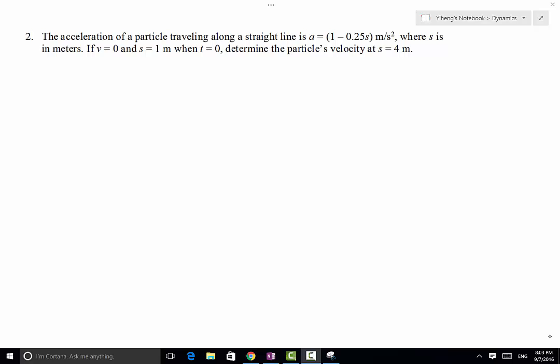In this problem, we have a particle traveling along a straight line and its acceleration is given as a function of displacement s. Now if we know that at time equals 0, the initial time, velocity is 0 and s is 1, we need to determine the particle's velocity when s equals 4 meters.